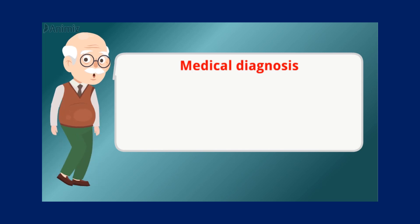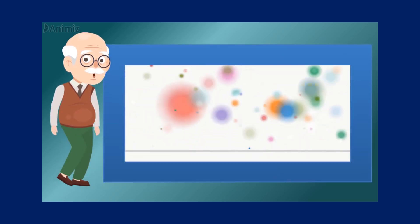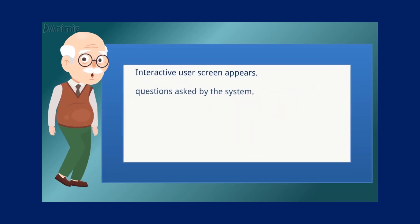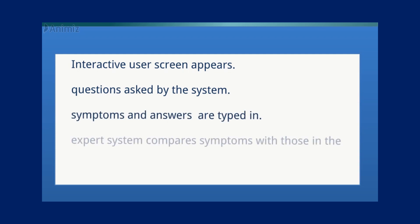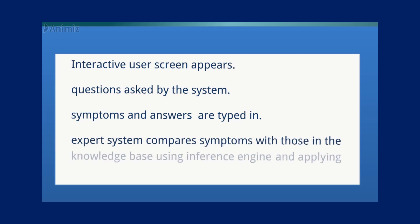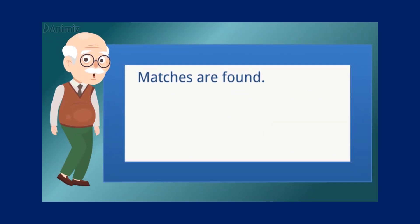Medical diagnosis is another example of situations where expert systems might be used. The process starts where an interactive user screen appears, questions are asked by the system, and symptoms and answers are typed in. Next, the expert system compares symptoms with those in the knowledge base using the inference engine and applying the rules base. Matches are found and possible diagnoses and advice are offered.